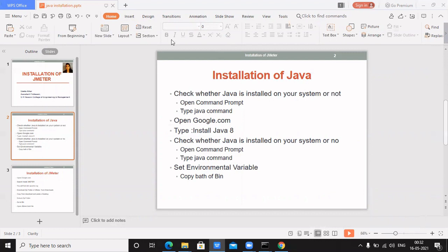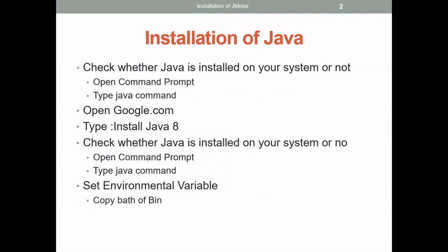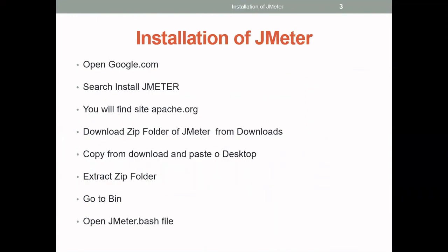This is how you are going to install Java on your system. I hope all of you can understand the installation steps. The next step is how to install JMeter. Again, open google.com and search 'install JMeter'. You will find the site at apache.org, because JMeter is owned by Apache. For JMeter, you do not need to install any software like we did for Java — you just download the JMeter setup and extract the files from the zip folder.